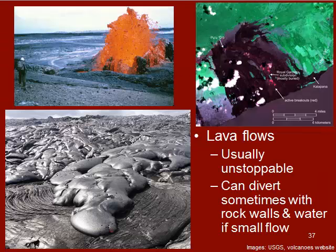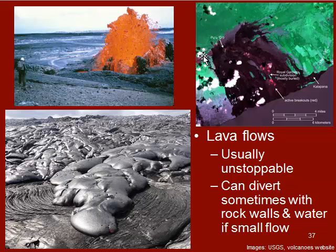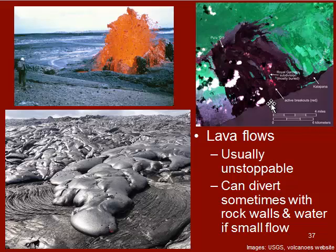Lava flows are more of a hazard in Hawaii, where effusive eruptions can be produced. They're pretty much unstoppable, but if small enough you might be able to divert them using rock walls or water. Usually you can only divert, not stop them. An example is when the Pua O'o volcano in Hawaii erupted and buried an entire community — it was too much lava, too fast, and the whole place was gone. There is one person who still lives there; his house was protected, but he has to hike in and out because all the roads are destroyed.